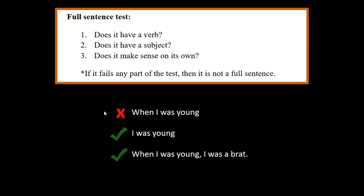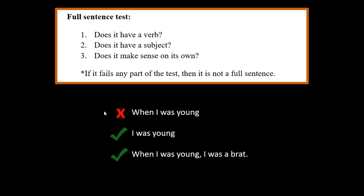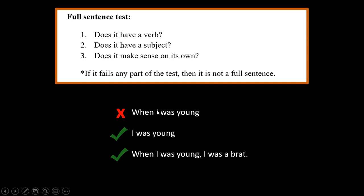The last part of the test is: does it make sense on its own? You have to develop a gut sense for this. Sometimes something has a subject and a verb and passes the first two parts, but still fails because it doesn't make sense on its own. For example, 'when I was young' — it sounds unfinished, like it left you hanging. Sentences like this often have a word at the beginning that makes it a fragment. 'When I was young' has a subject 'I' and a verb 'was,' but it still fails the full sentence test.